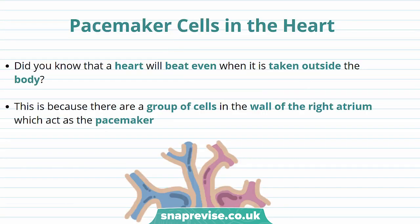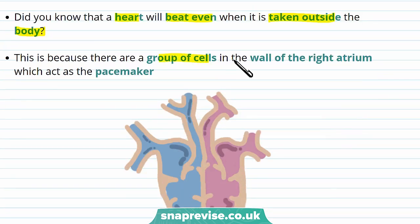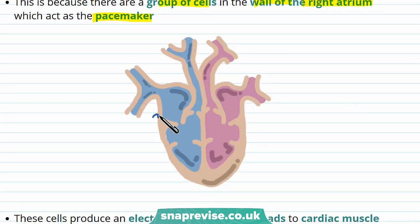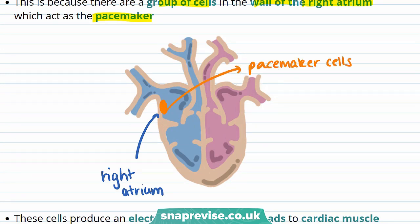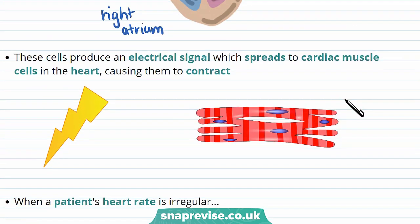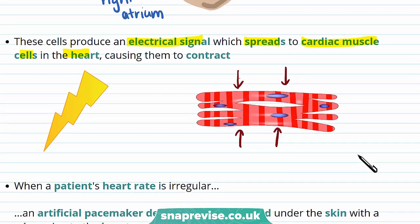An interesting thing about the heart is that it will beat even if taken out of the body, as long as it's supplied with oxygen and glucose. This is because there's a group of cells in the wall of the right atrium that acts as a pacemaker. These pacemaker cells produce an electrical signal that spreads to cardiac muscle cells in the heart, causing them to contract and producing a heartbeat.